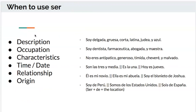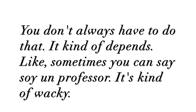So now, when do you use ser specifically? Ser is used for descriptions, occupations, characteristics, time or date, relationships, and origins. For descriptions you can say things like: soy delgada, gruesa, corta, latina, judía, azul, alta — meaning thin, thick, short, Latina, Jewish, blue-eyed, tall — and so on for colors and religion. For occupations and professions, you'd say soy dentista, not soy una dentista.